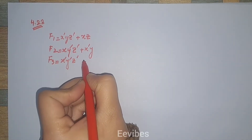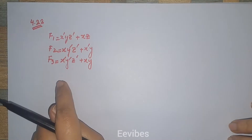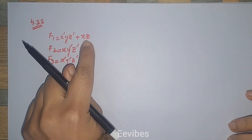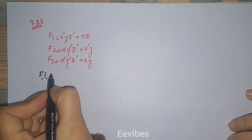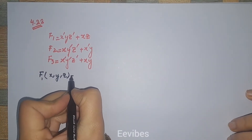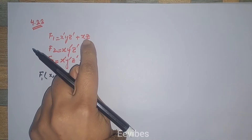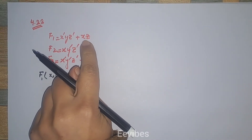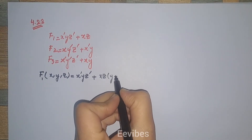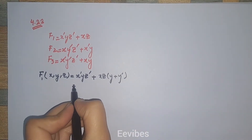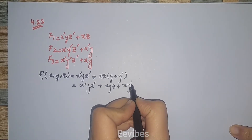You must always remember that while implementing functions using the decoder, all the minterms should be in their standard format. Looking at F1, which is a function of variables x, y, and z: the first minterm is x-complement·y·z-complement. The second term x·z is missing variable y, so x·z can be written as x·z·(y + y-complement) to get it into standard format. This becomes x·y·z plus x·y-complement·z.